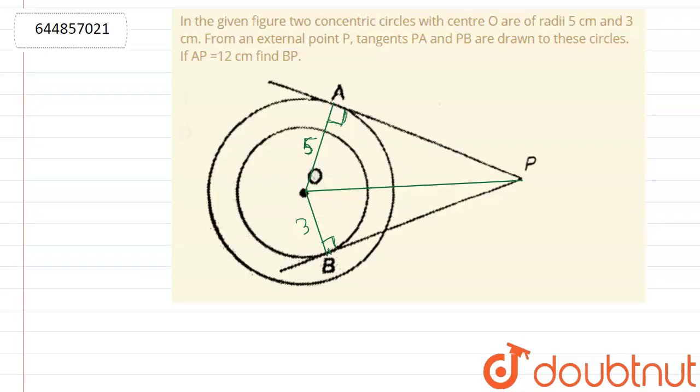Hello friends, here the question is: in the given figure two concentric circles with center O are of radii 5 cm and 3 cm from an external point P. Tangents PA and PB are drawn from this external point P to these circles. If AP is equal to 12 cm, find BP.